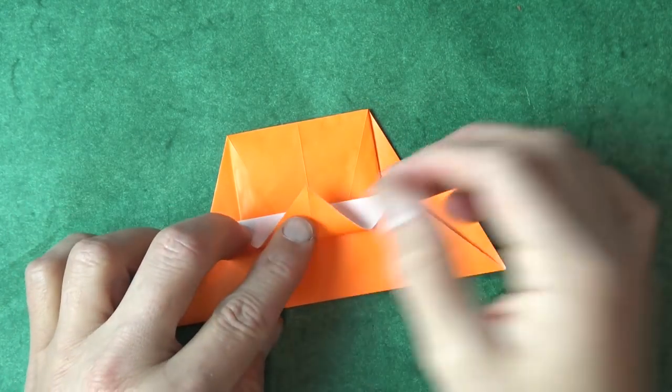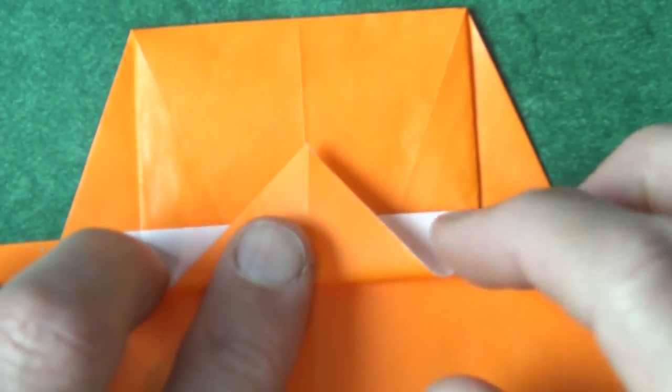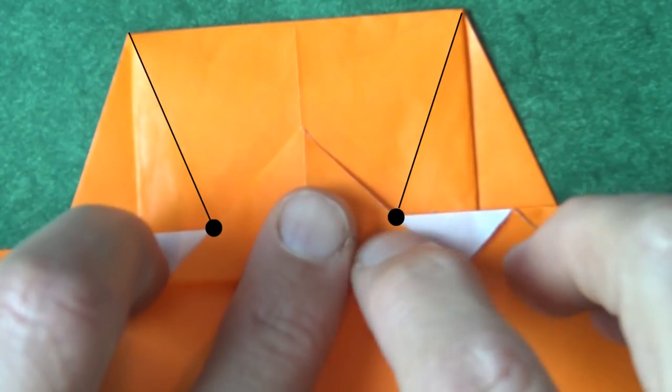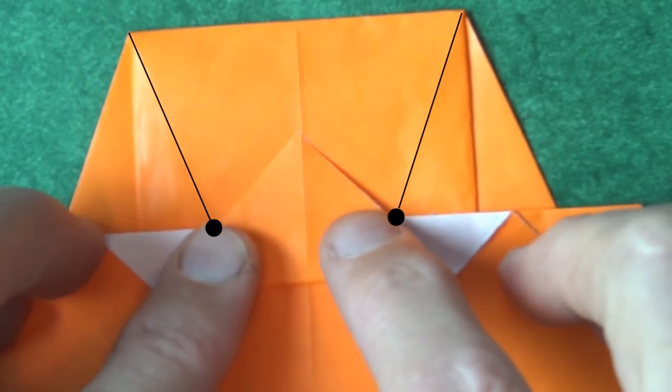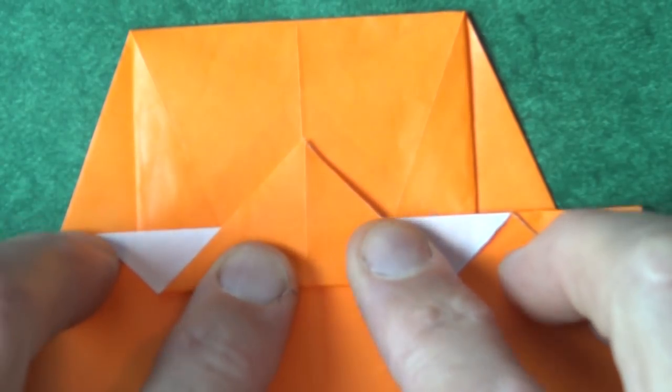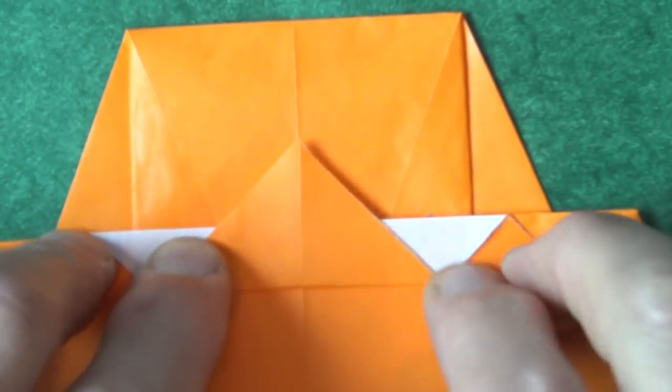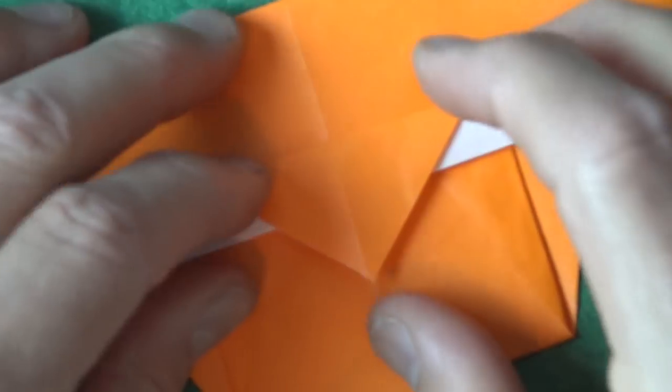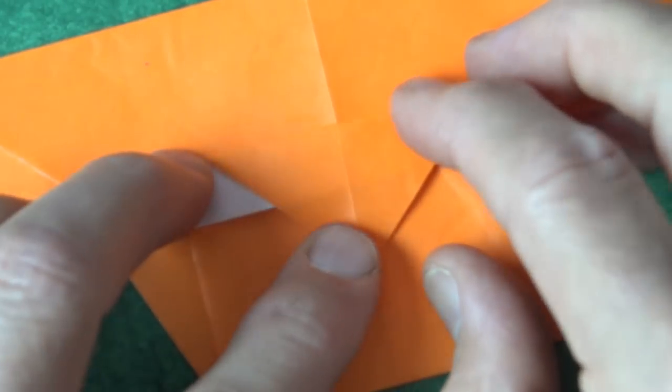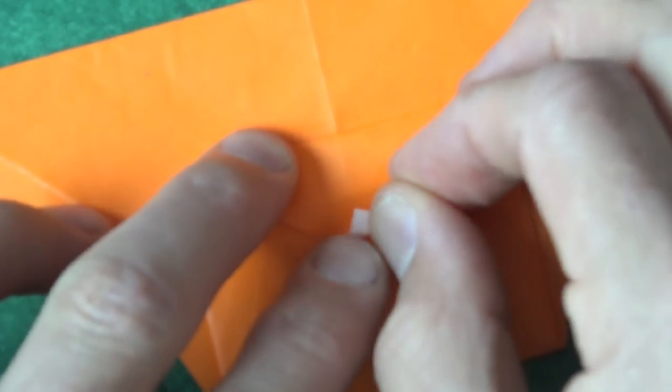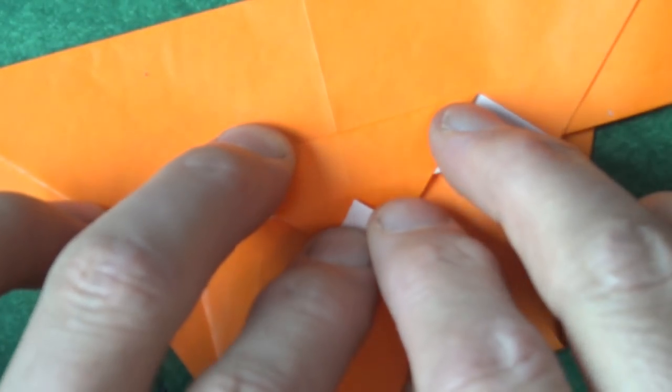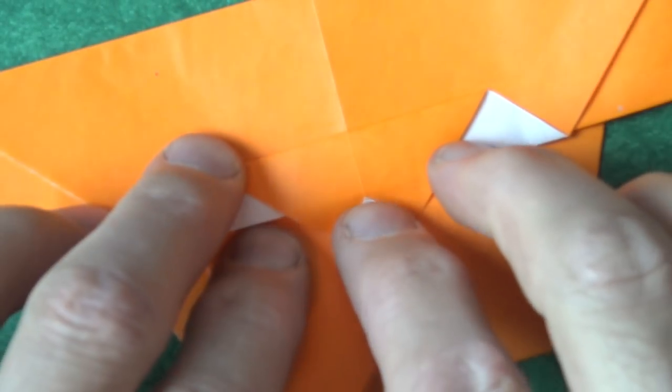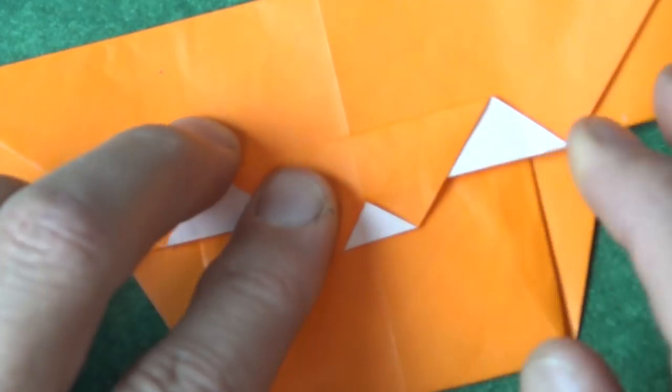All right, now fold this flap up so that this edge touches the point where the crease hits the edge. And same on this side. And rotate.